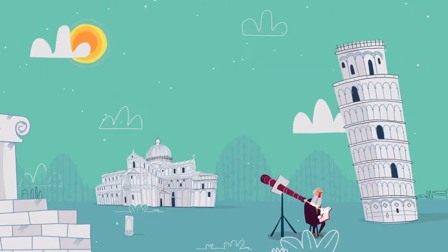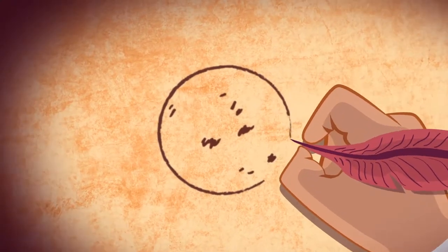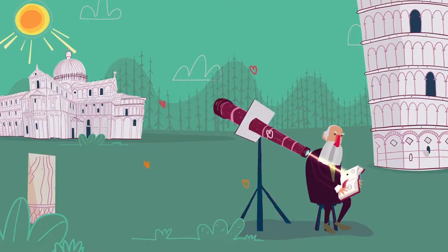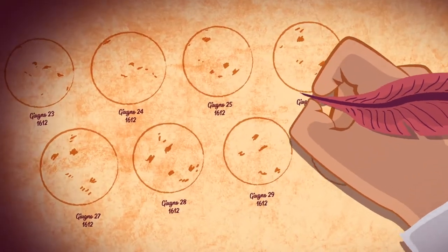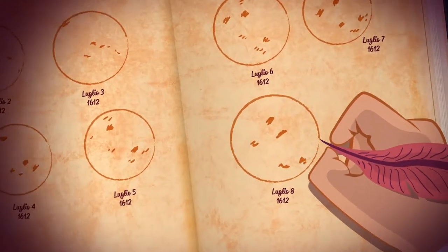Galileo era ossessionato da queste strutture misteriose. Le osservò e le disegnò durante un'intera estate. Vide le macchie muoversi ed evolversi attorno al disco solare. Aveva scoperto la rotazione del Sole.